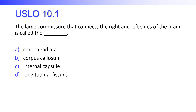The large commissure that connects the right and left sides of the brain is called... you might not know what a commissure is, but there's something that connects the left and right side of the brain — and that would be the corpus callosum. The corpus callosum is called a commissure, and that's what connects the right and left hemispheres.